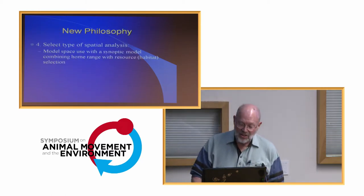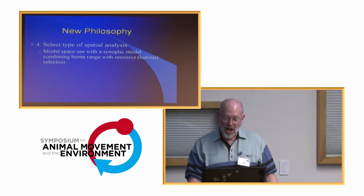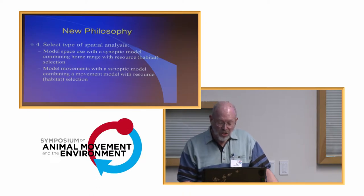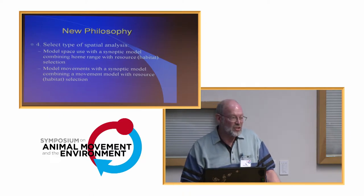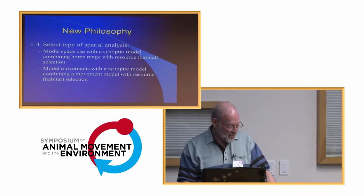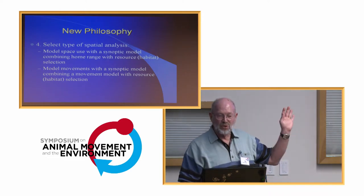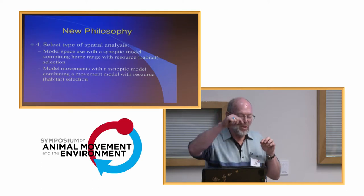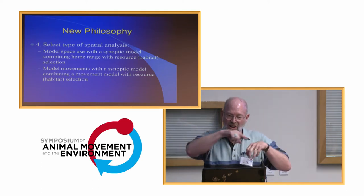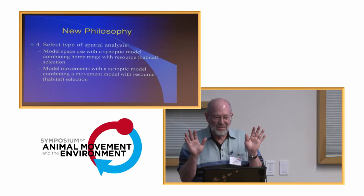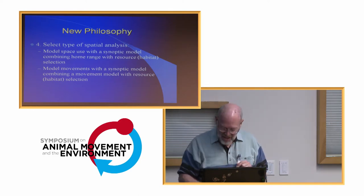Fourth: let's select the type of analysis. You could model space use with a synoptic model combining home range with resource selection. You could model movements with a synoptic model combining a movement model with habitat selection. One of my students, John Horn, and I developed a method called the Brownian movement model, ideal for GPS location data — the null model is random movement between known fixed locations incorporating error. You can bring habitat in at the same time as a synoptic model, though we don't have time to cover that.